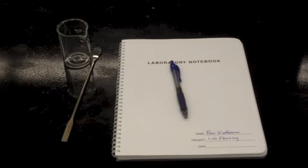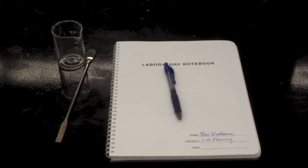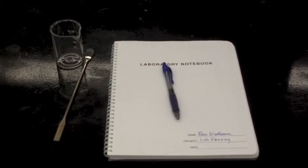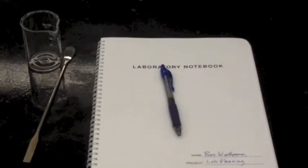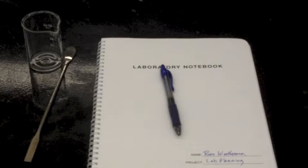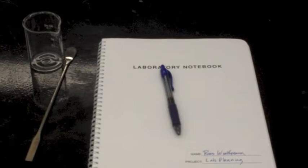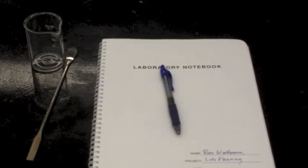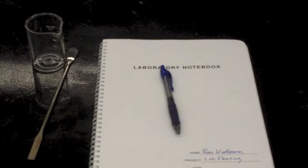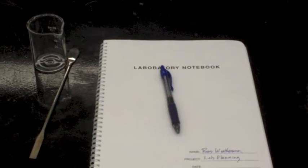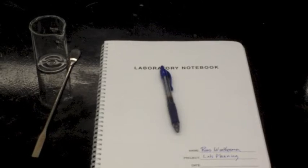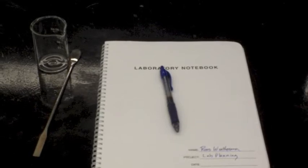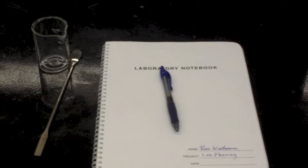We have a lot of labs where we use the balance, and the key is to be efficient. The most important thing with efficiency is knowing what you need to bring up to your balance each time. You should have a lab manual, your spatula you're going to use to weigh, and something to weigh into—preferably something dry, because having something wet can either get water on the balance or distort your values if you have evaporation.